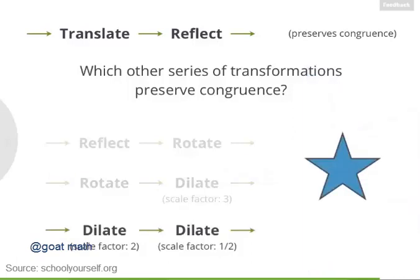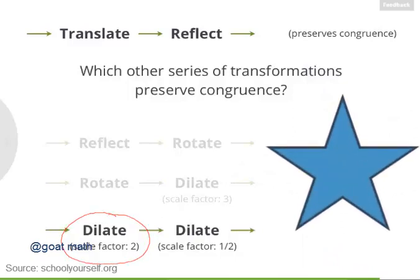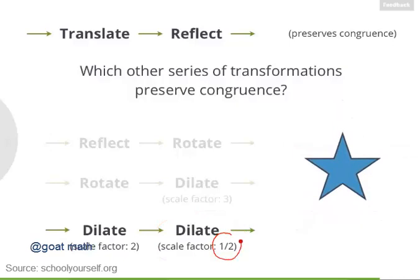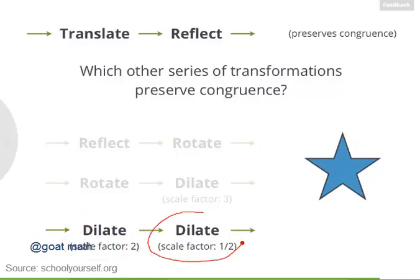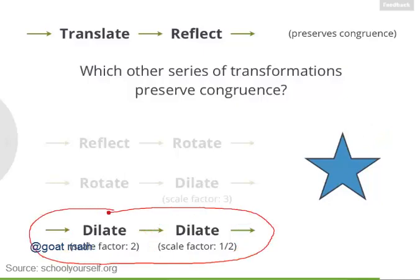Finally, let's look at this last series of transformations. If we dilate this shape by a factor of 2, it's no longer congruent to the original star. But if we apply a second dilation with scale factor 1/2, that precisely undoes the effects of the first dilation, and we're back with the original star. So while neither of these individual dilations preserves congruence, they do preserve congruence together.